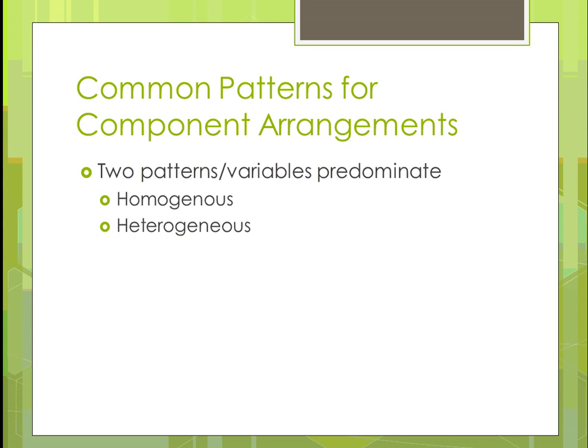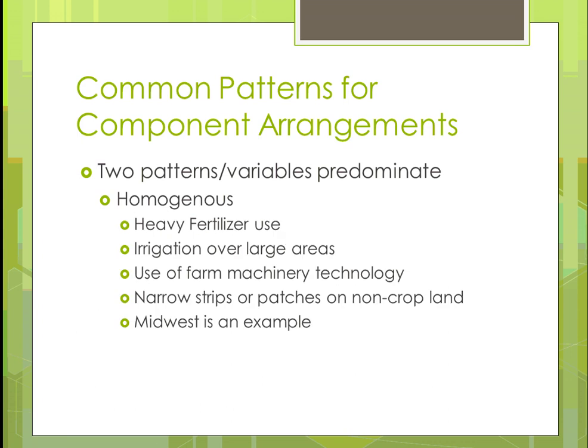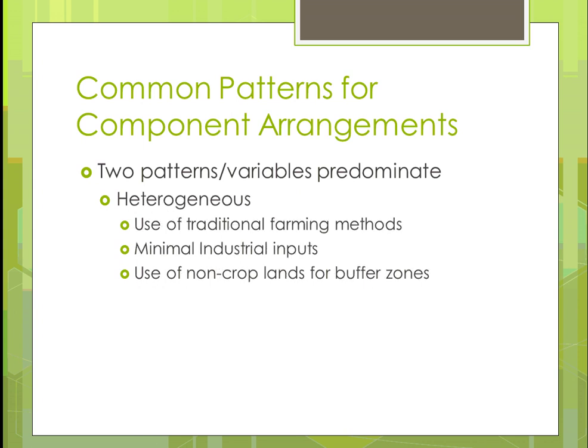Two patterns or variables will be predominant: homogeneous or heterogeneous. Homogeneous means the same — examples include heavy fertilizer use, irrigating over large areas, and having narrow strips or patches of non-crop land like waterways. The Midwest is a great example of a homogeneous arrangement. Heterogeneous, on the other hand, means using traditional farming methods with minimal industrial inputs and using non-croplands as buffer zones.